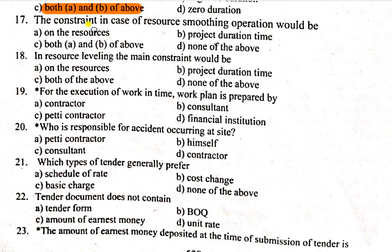Similarly, the constraint in the case of resources smoothing operation — what is resources smoothing? I have a project and the resources are available to you. So in resources smoothing, the time period is fixed — you have to complete the project within the given time. So the restraint in the case of resources smoothing would be on the project duration.